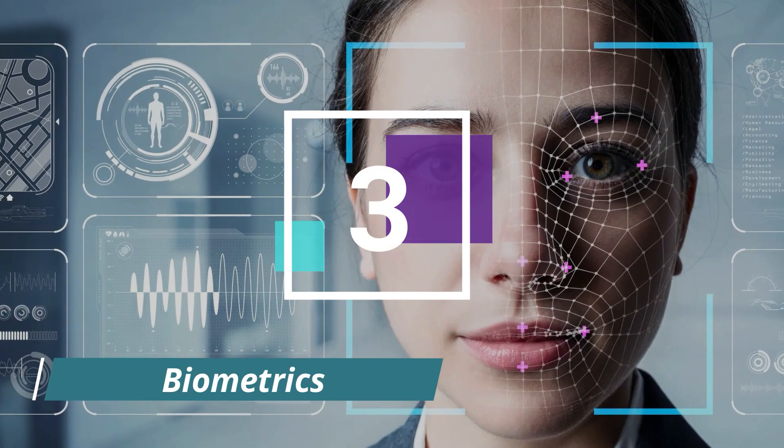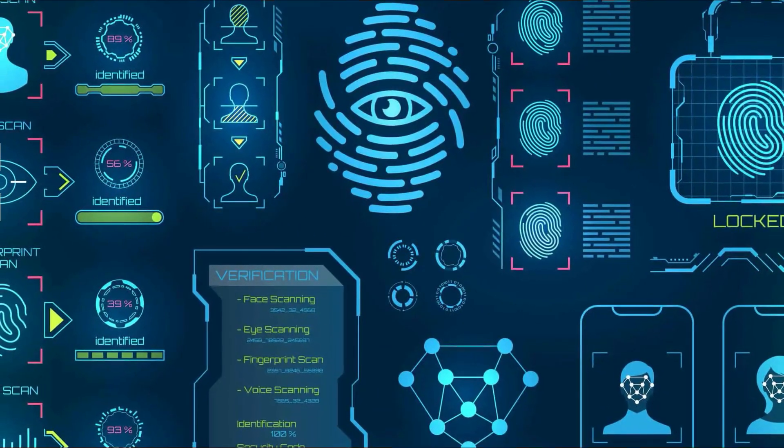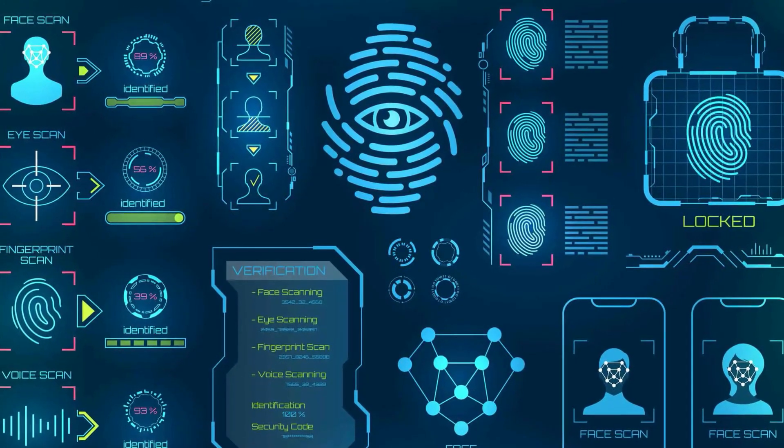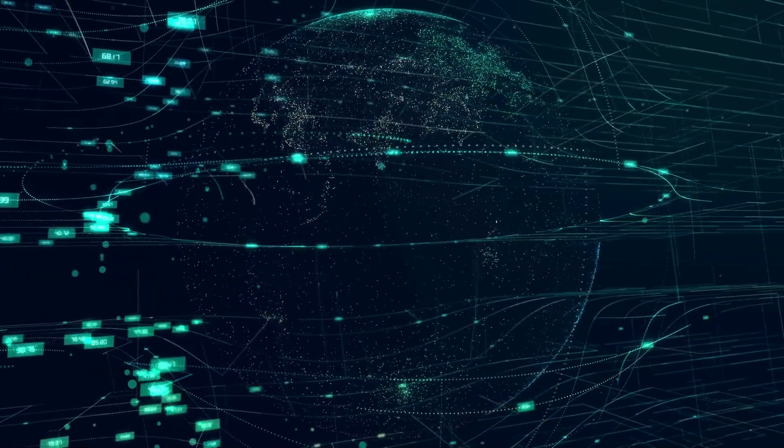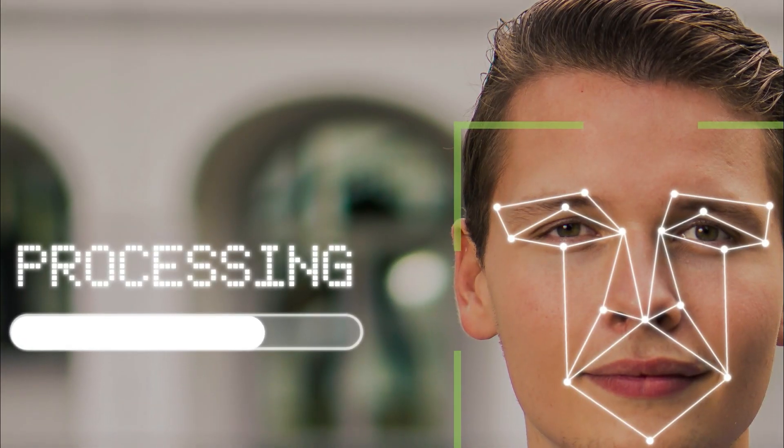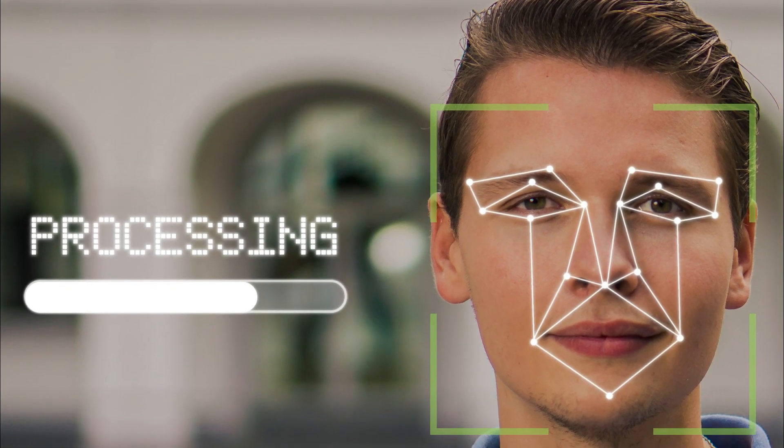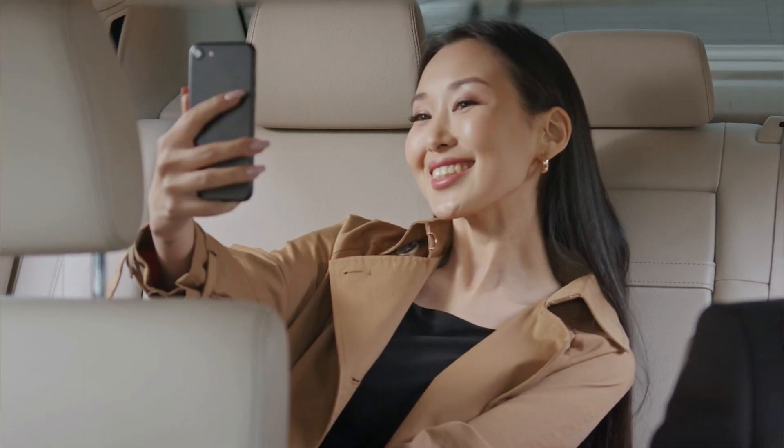At number 3 spot, is Biometrics. Biometrics may be a futuristic technology that stands because of the source of interaction between humans and machines. There are many sorts of Biometrics technology, namely image recognition, tone recognition, iris recognition, DNA matching, retina recognition, voice recognition and so many others that are making it big within the digital world. Biometrics allows an individual to be identified and authenticated, supported, recognizable and verifiable data, unique and specific.